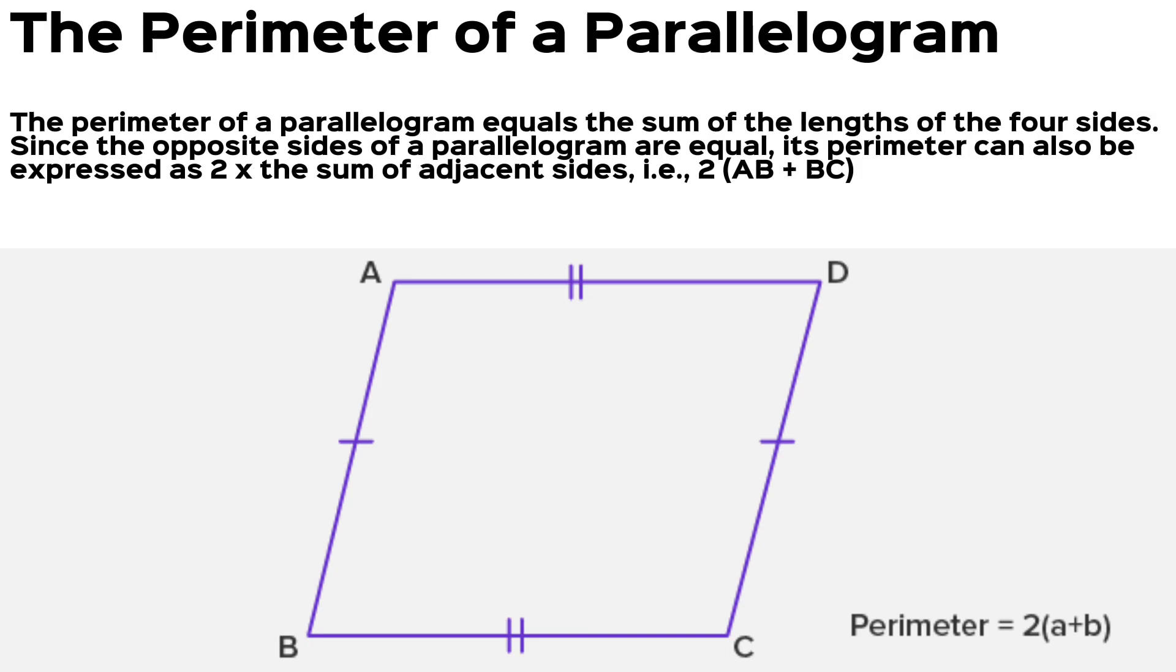The perimeter of a parallelogram. The perimeter of a parallelogram equals the sum of the lengths of the four sides. Since the opposite sides of a parallelogram are equal,